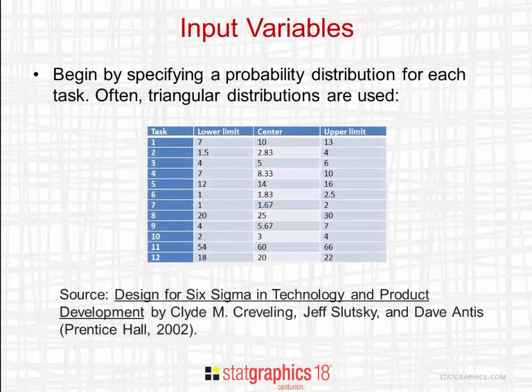We'll begin by specifying a probability distribution for the length of time required to complete each of the 12 tasks. It's common in Monte Carlo simulation to use a triangular distribution, which is defined by a minimum value, a most likely value in the center, and a maximum value. For example, the table here indicates that task 1 will take somewhere between 7 and 13 days, with the most likely amount of time being 10 days.